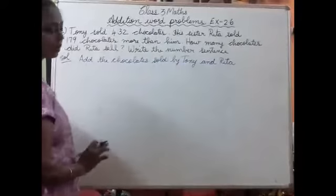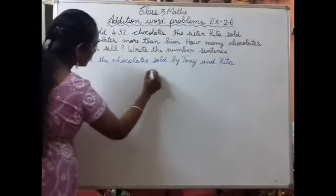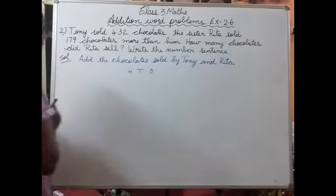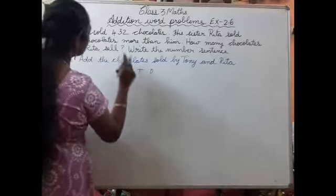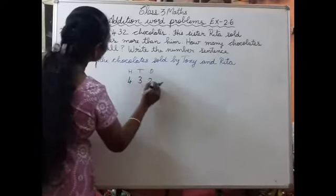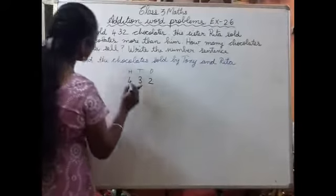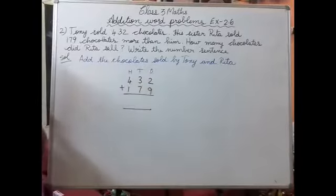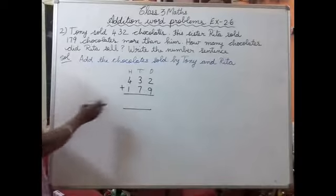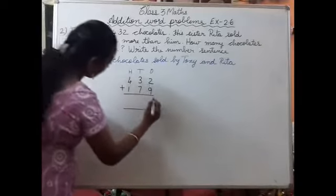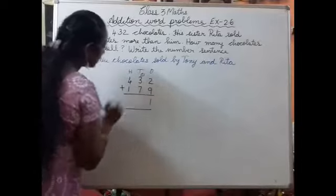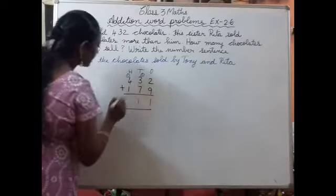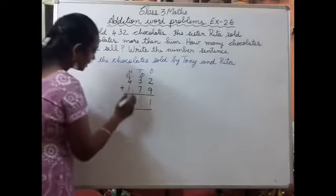We have to add both these numbers. First we have to write 1s, 10s, 100s. Number of chocolates sold by Tony is 432, and number of chocolates sold by Rita is 179. We have to add both. 1s place: 9 plus 2 is 11, one carry. 7 plus 3 is 10, 10 plus 1 is 11, one carry. 4 plus 1 is 5, 5 plus 1 is 6. So 611 chocolates are sold by both.